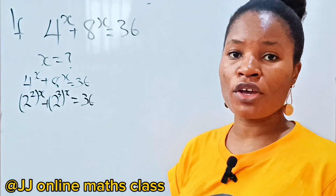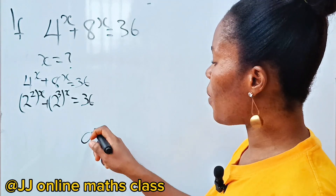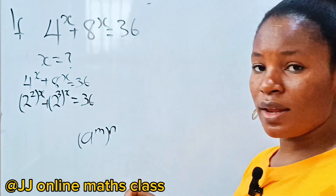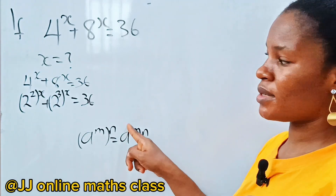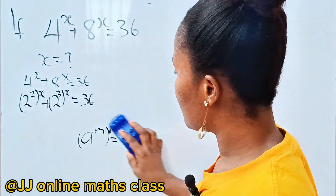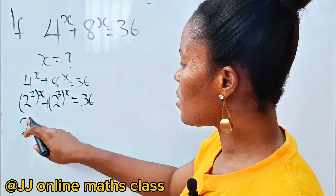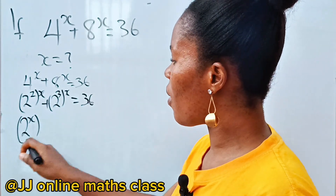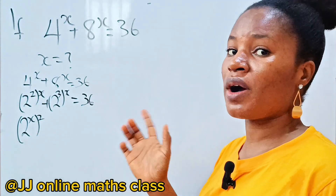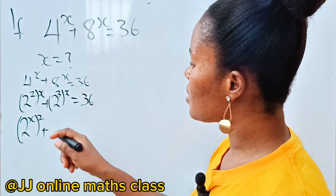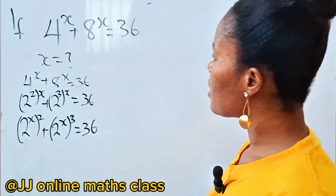According to the law of indices, a to the power of m, raised to the power of n, equals a to the power of mn. Applying this, we get 2^(x·2) + 2^(x·3) = 36, which we can write as (2^x)² + (2^x)³ = 36.